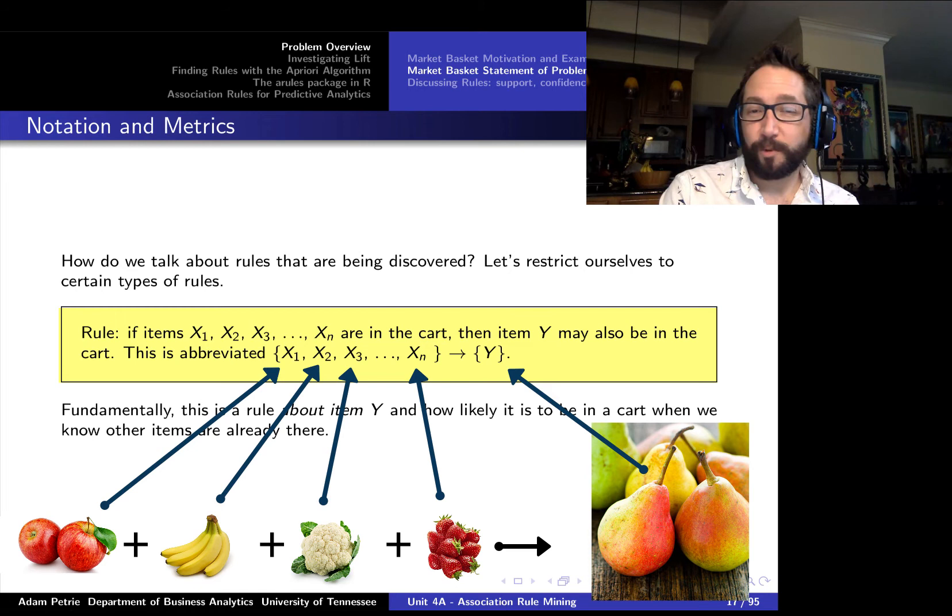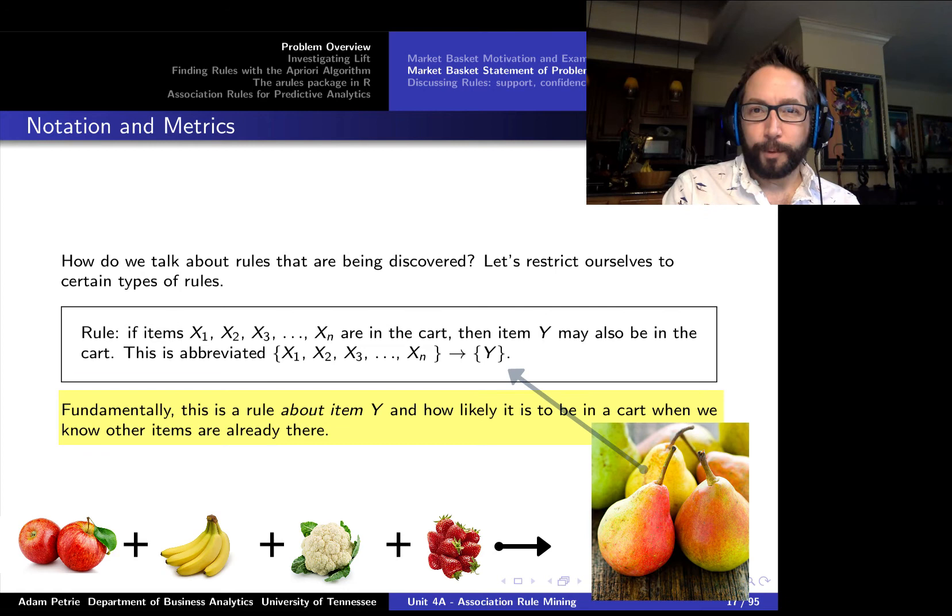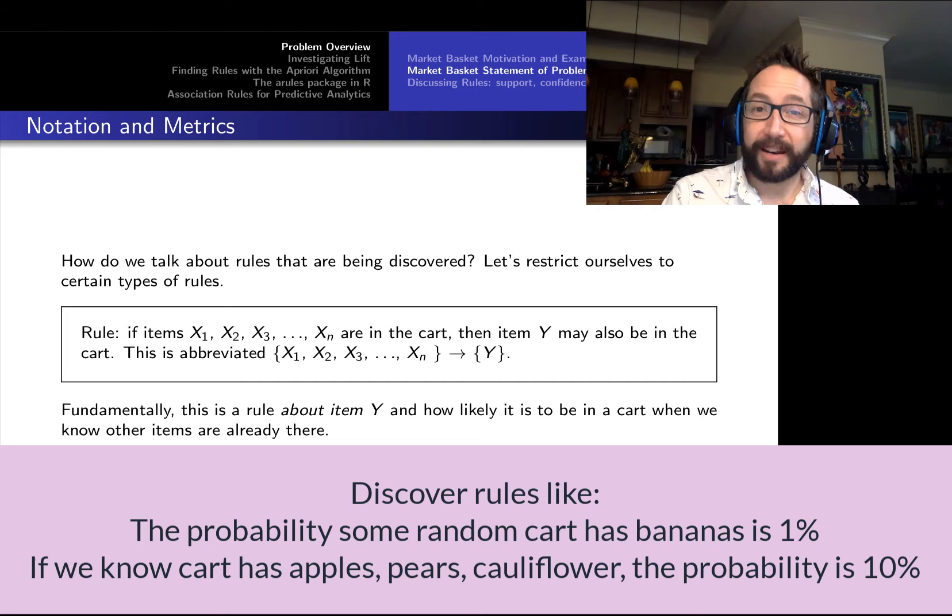We're going to suggest maybe pairs or whatever item tends to be purchased along with that combination. So fundamentally, when we talk about these rules that are being discovered, fundamentally, this rule is going to be about the item that appears to the right hand side of the arrow, that single item, which we're referring to as y on this slide. And it's going to tell us the probability of finding that item in a cart that contains the items to the left hand side of the arrow, all of those x's. So we might know something like 1% of all shopping carts have bananas in them. But if we know that a cart has apples, pears, and cauliflower, maybe that probability goes up by a factor of 10, from 1% up to 10%. So we want to find rules that look like this, and we want to be able to talk about the implications of those rules.